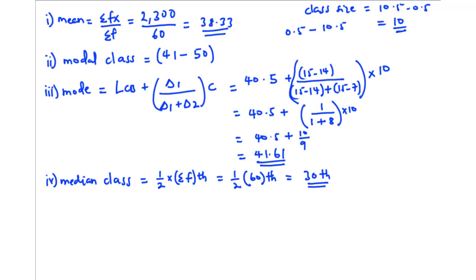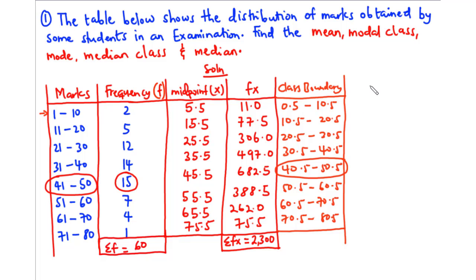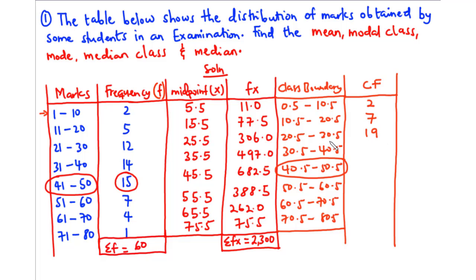To find the median class, we create a cumulative frequency column. Cumulative frequency adds up progressively: 2, then 2 plus 5 is 7, plus 12 is 19, plus 14 is 33, plus 15 is 48, plus 7 is 55, plus 4 is 59, plus 1 is 60. The final cumulative frequency should equal the summation of f, which it does.